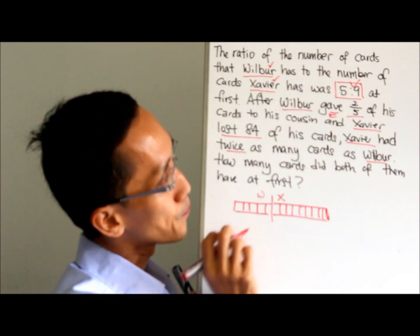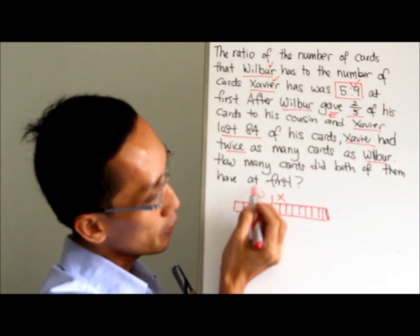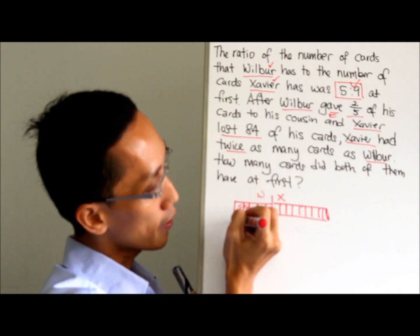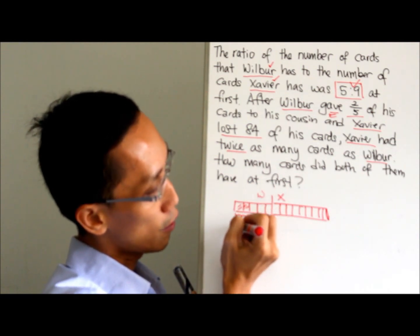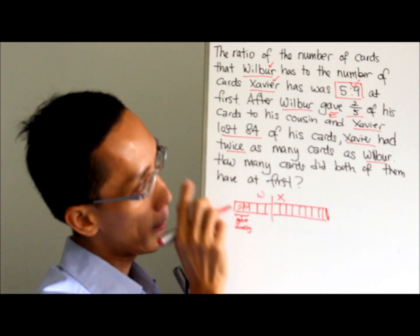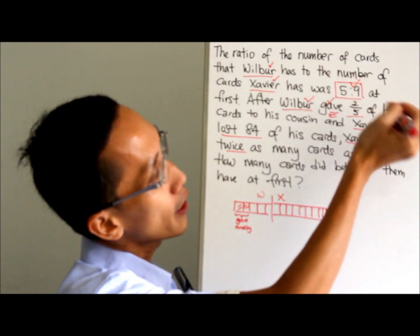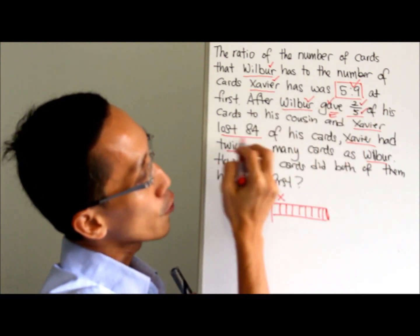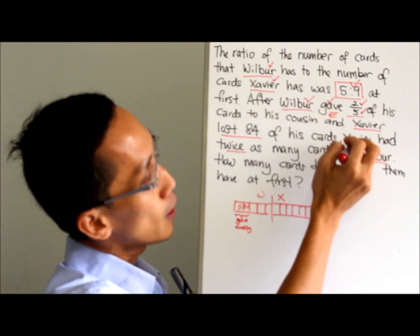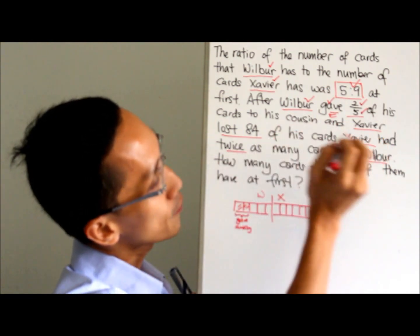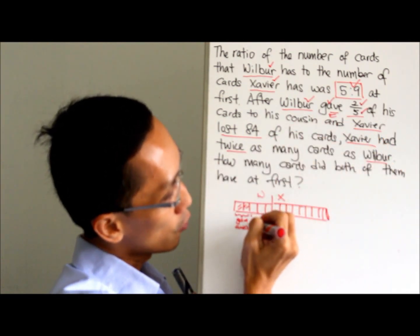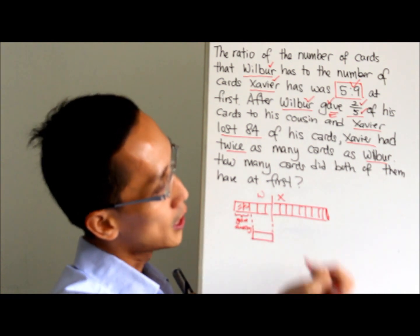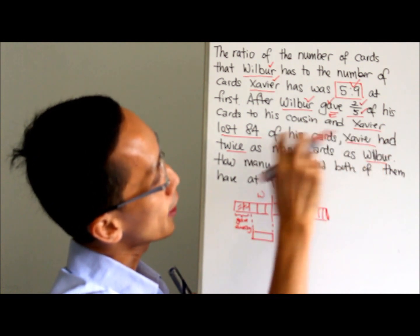Next, he gave two-fifths. Wilbur is here. Two-fifths gave away, shade here. This part I can't do anything, so I go to the next part. Xavier will have twice as much as Wilbur, so this part will be Wilbur and Xavier will have twice.